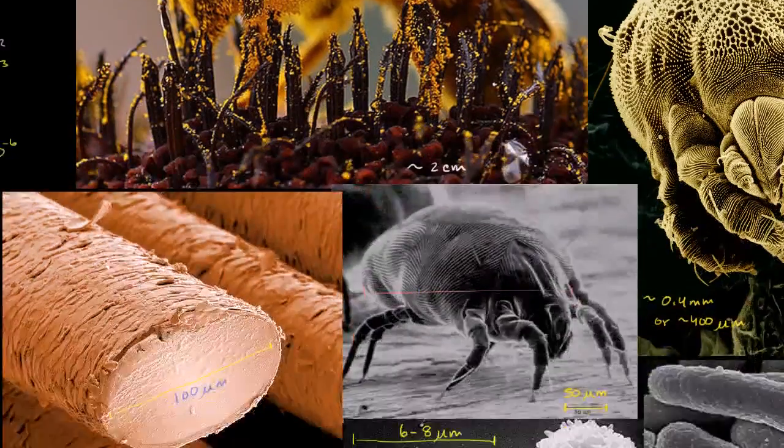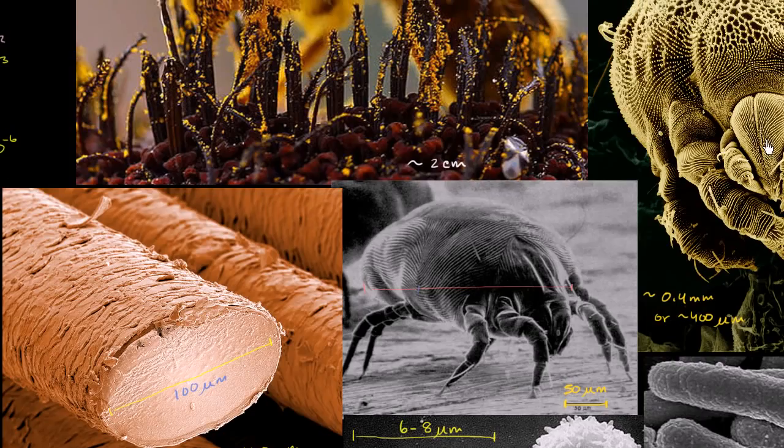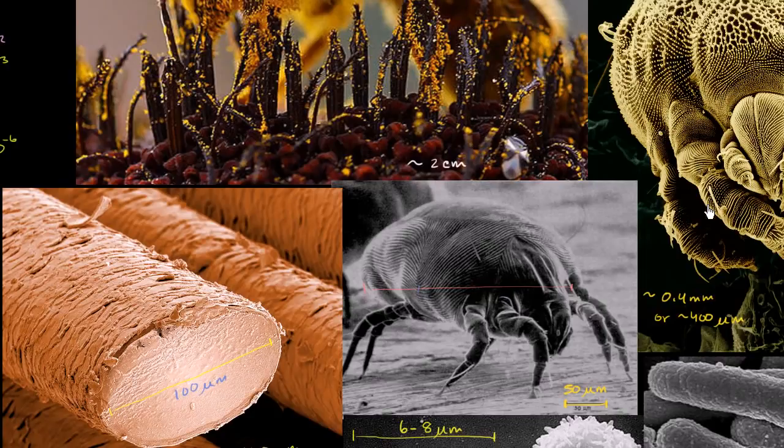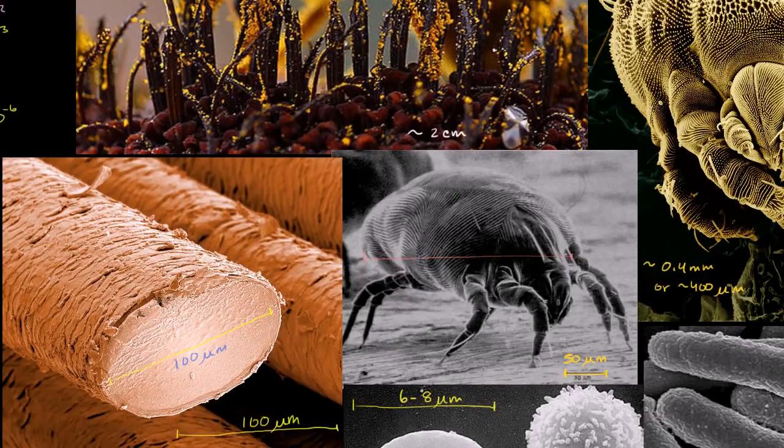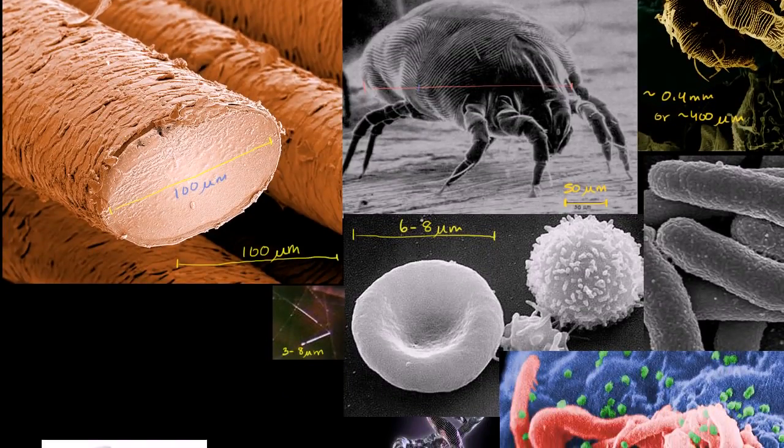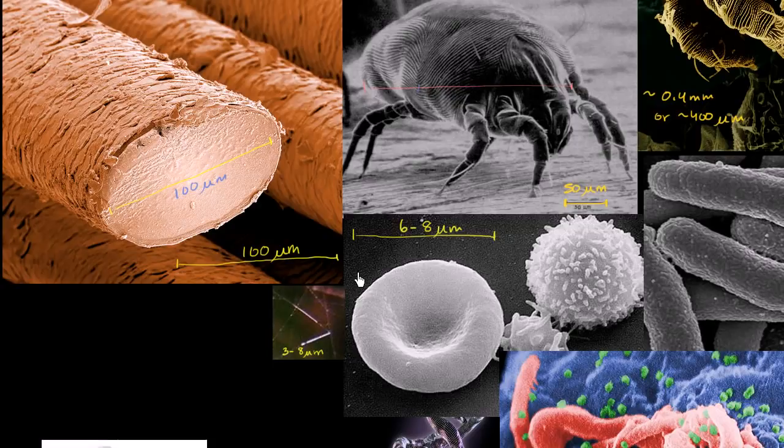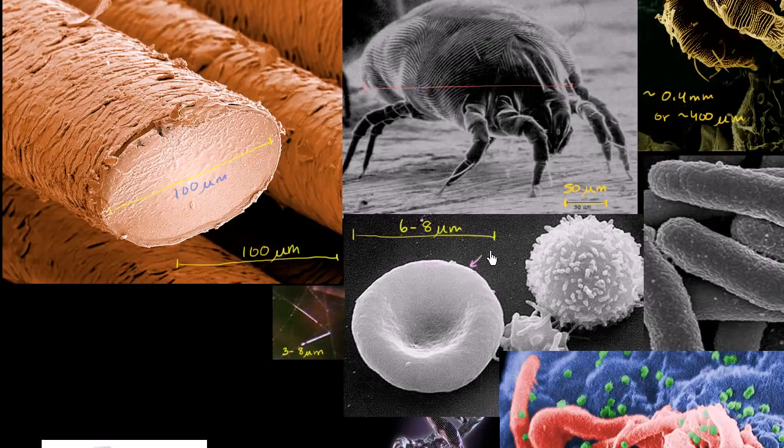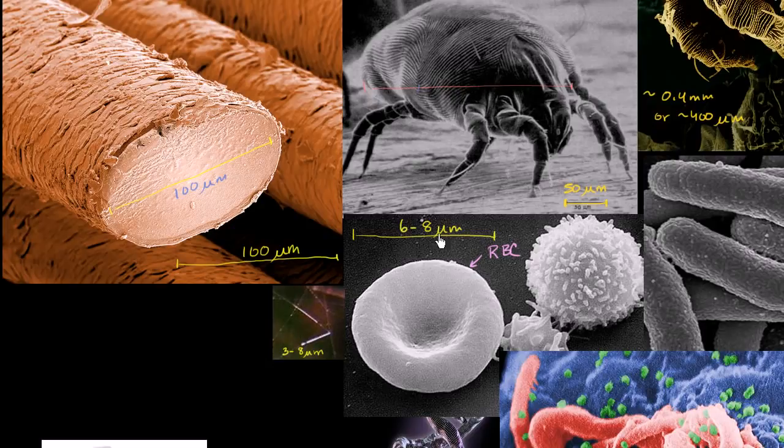Let's zoom in even more. We started with the honeybee. We zoomed in by 50 to get the dust mite. We zoom in by another factor of 4 to get the width of human hair. If we zoom in by roughly another factor of 10, we get to the scale of cells. And this right here is a red blood cell. About 6 to 8 micrometers.